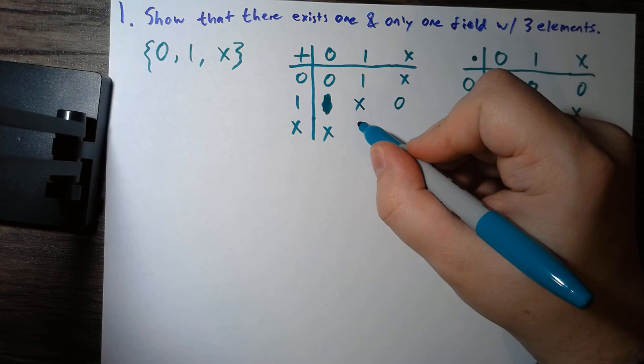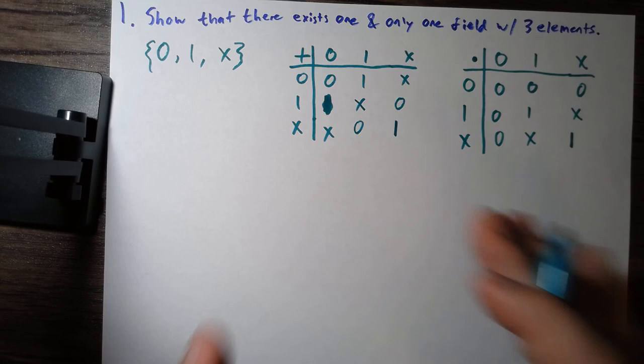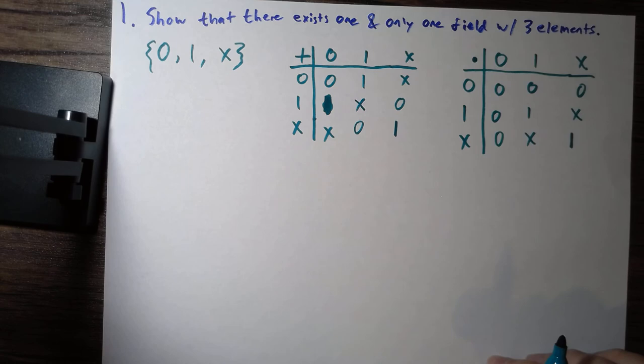So we have to have one plus one is x. And we can just fill out the rest of the table and x plus x is then equal to one. And so our addition multiplication tables are just set in stone, just using the properties of fields.